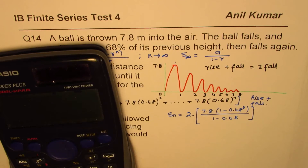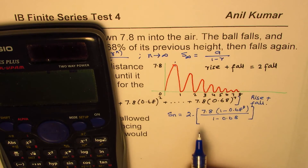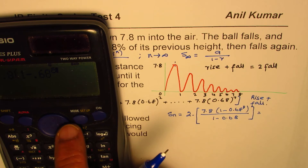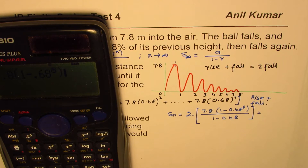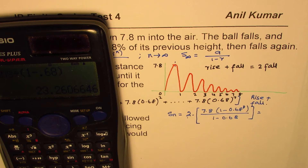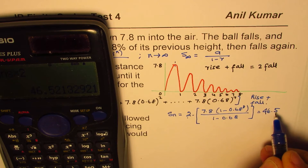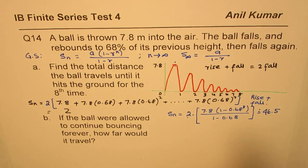Now let's use a calculator to find the answer. We compute 7.8 times (1 minus 0.68 to the power of 8), then divide by (1 minus 0.68), which equals 23.26. Then multiply by two, giving us approximately 46.5 meters. The units are meters, so that is the answer for Part A.